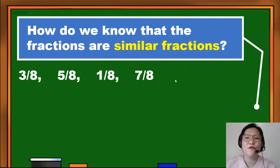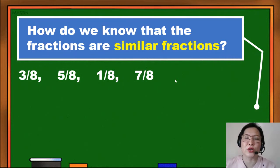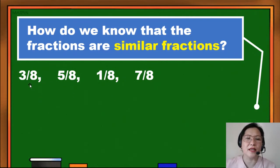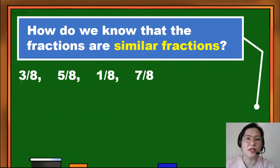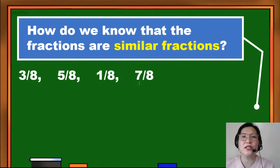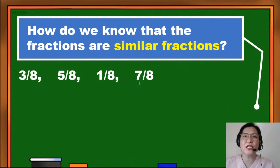Fractions have what we call numerators and denominators. Numerators are the numbers written above. So in these examples, 3/8, 5/8, 1/8, and 7/8, the numerators are 3, 5, 1, and 7, because they are the numbers above. They are called numerators, while the denominators are the numbers below.